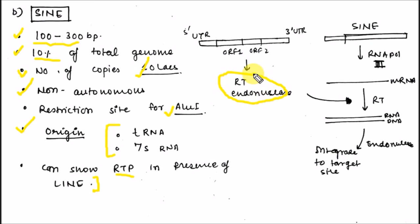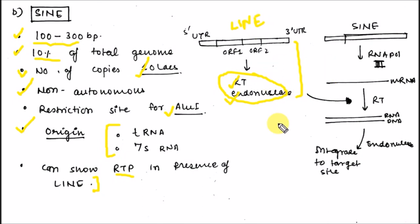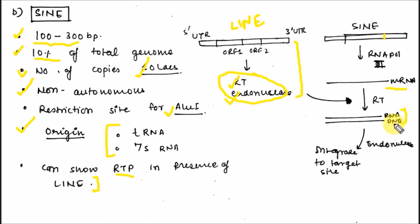SINE elements can show retrotransposition only in the presence of LINE elements; they cannot function in the absence of LINE. This is because the enzymes required for retrotransposition — reverse transcriptase and endonuclease — are provided by LINE elements. Similarly, SINE elements can be transcribed into mRNA with the help of RNA polymerase, and this mRNA is converted into an RNA-DNA hybrid with the help of reverse transcriptase provided by LINE elements. This RNA-DNA hybrid is then integrated into the target site with the help of integrase or various enzymes.